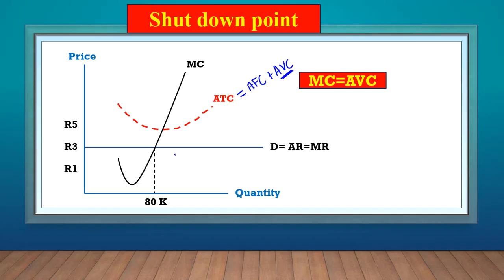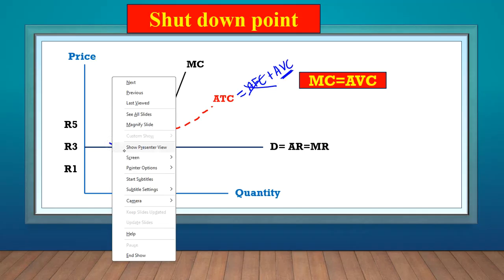Because when a firm can no longer meet its variable cost, it will shut down. So we can draw the AVC. We don't have to draw this one, but we can draw the AVC. And it has a very similar shape to the AC or to the ATC.